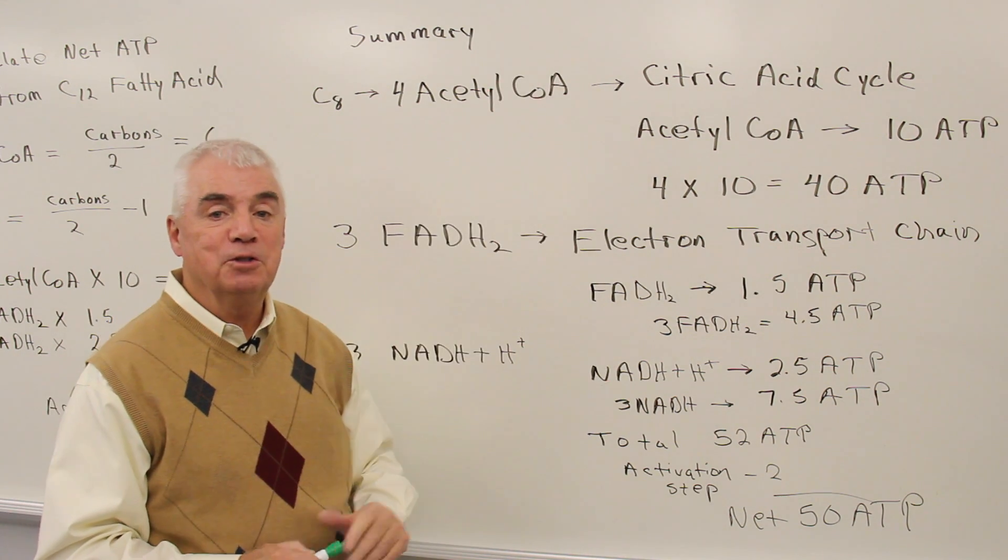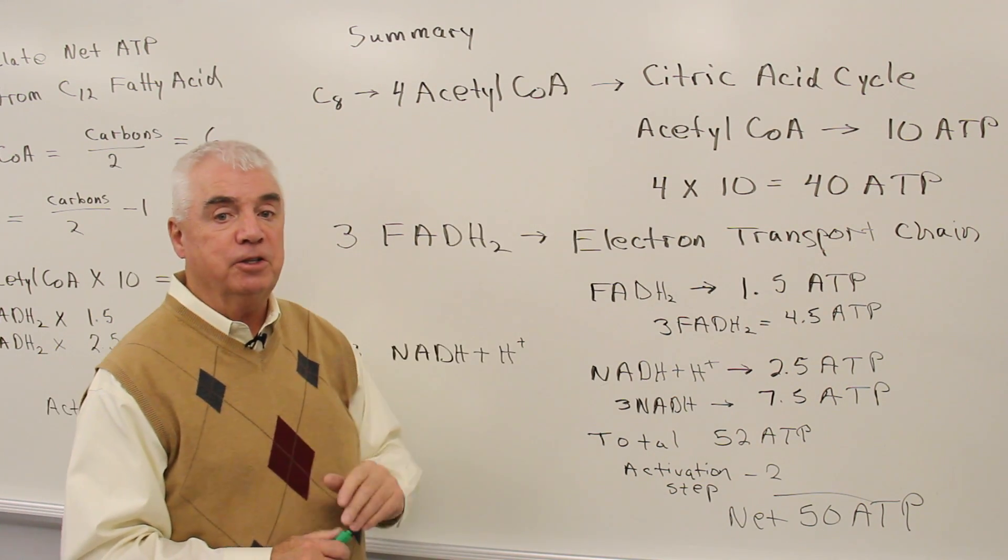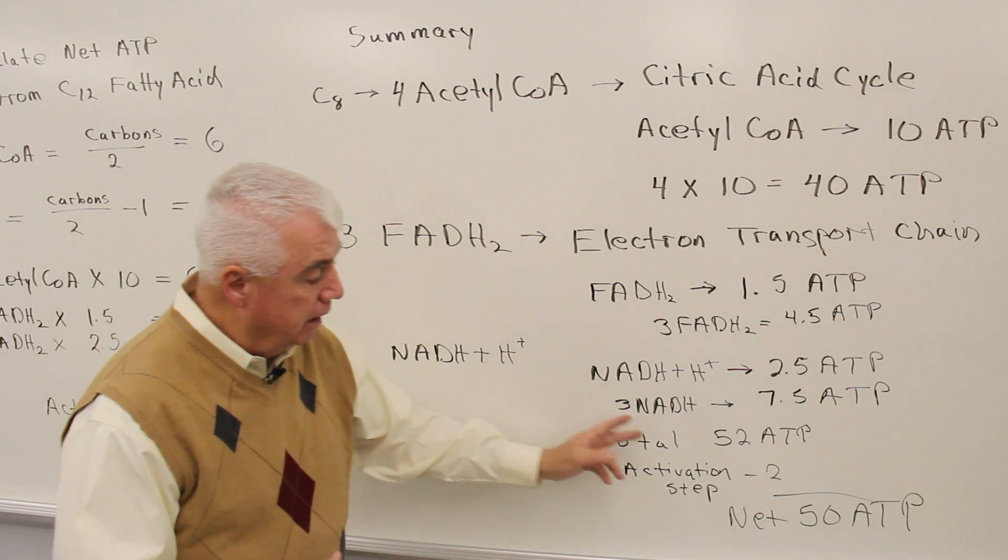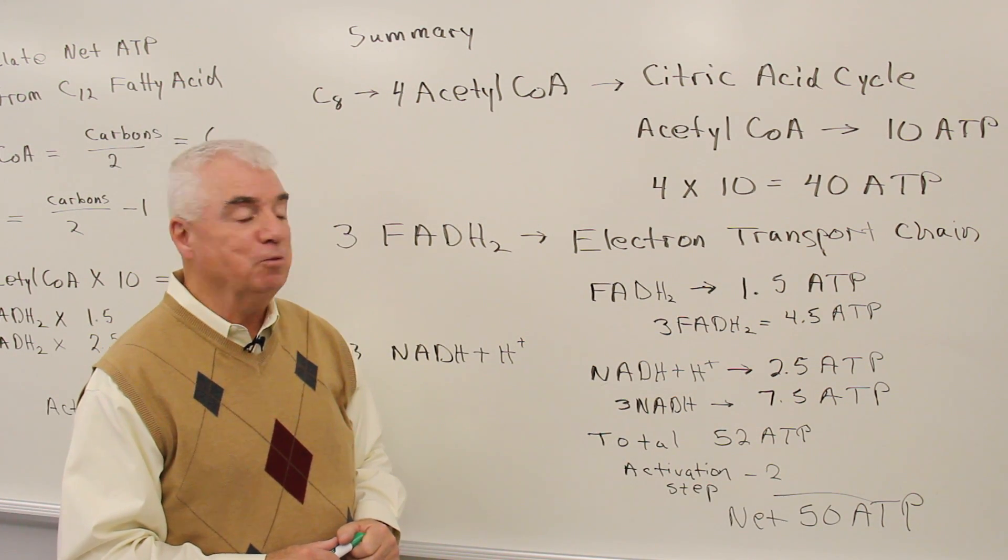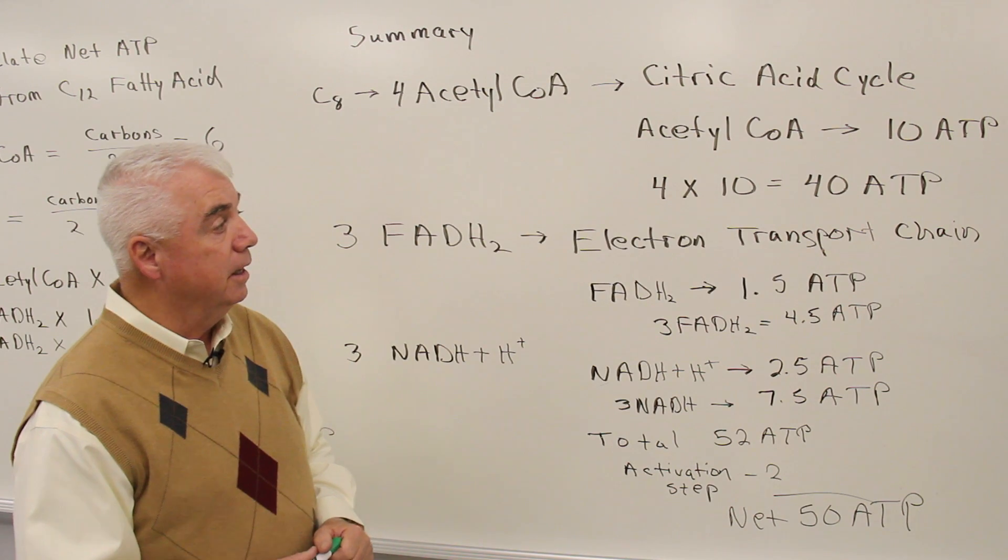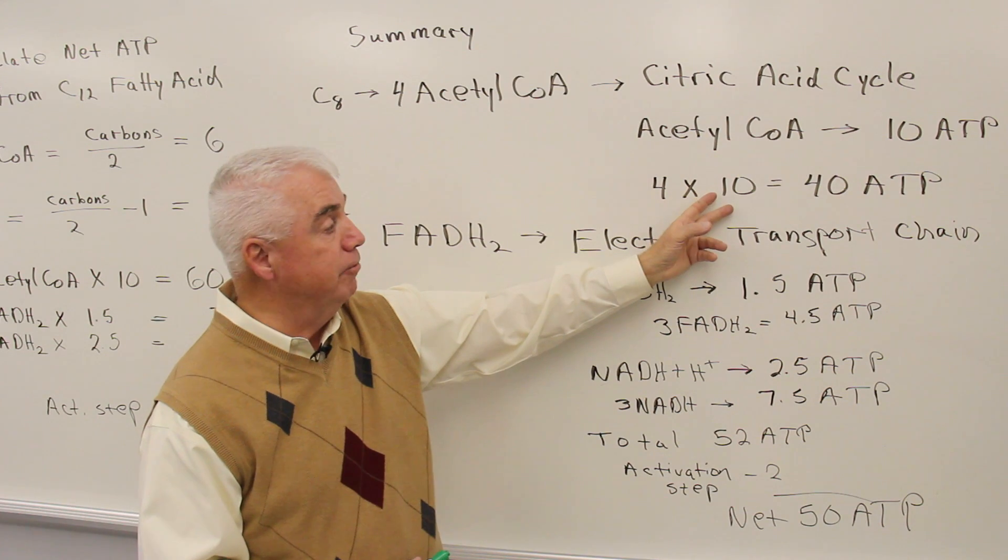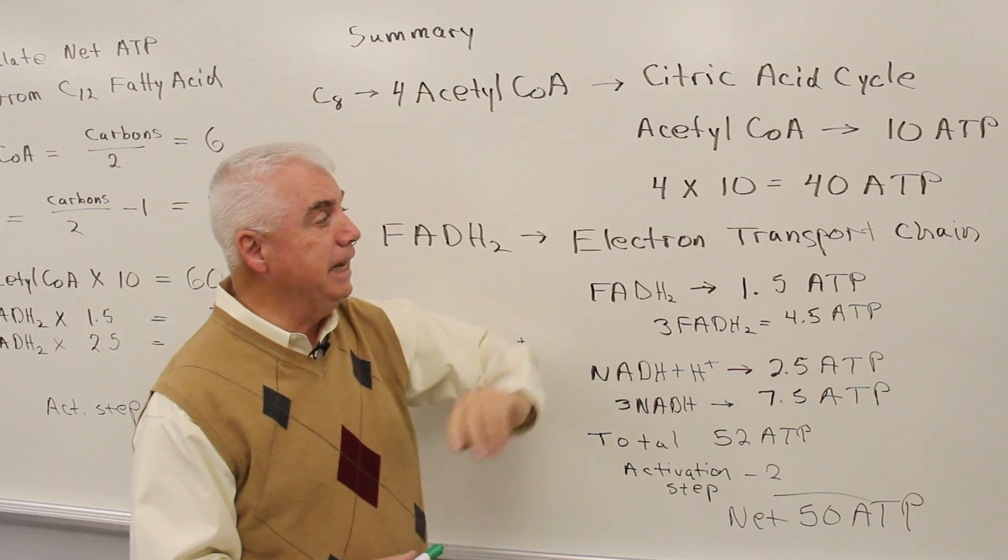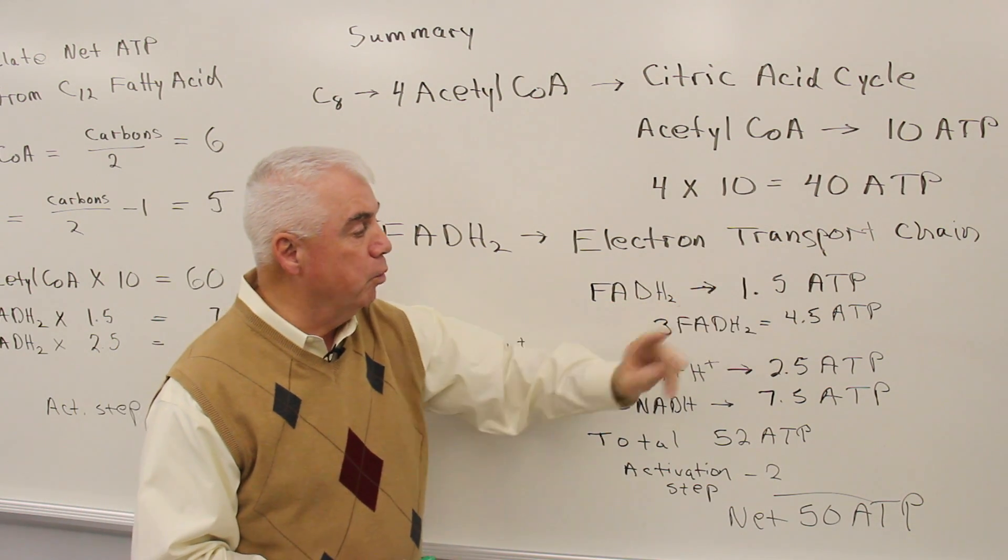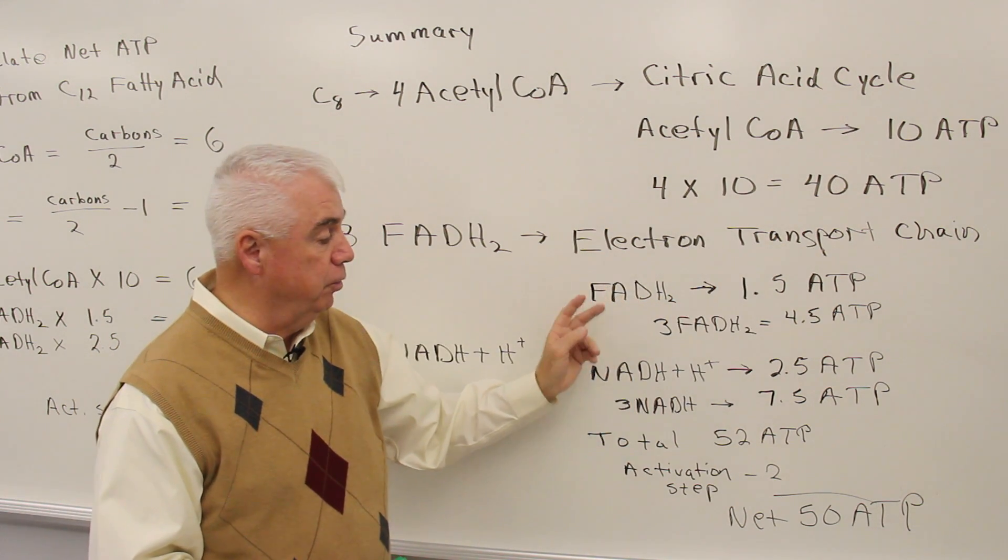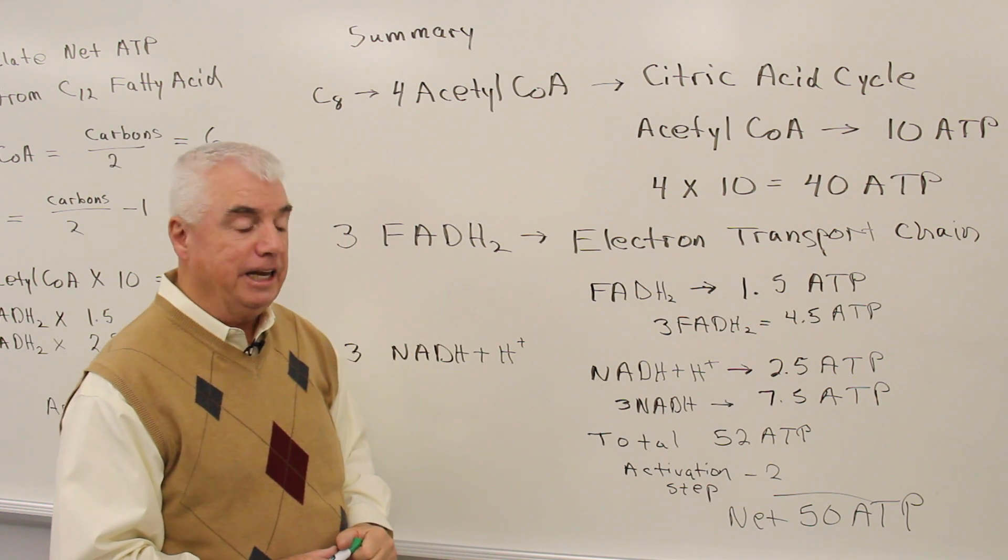So this is an important skill for you to have. If we gave you a fatty acid and ask you, what's the net production of ATP from that fatty acid? We'd like you to be able to do that. So three key numbers that you need to memorize or have on your exam sheet: 10 ATPs for every unit of acetyl-CoA, 1.5 for FADH2, and 2.5 for NADH.